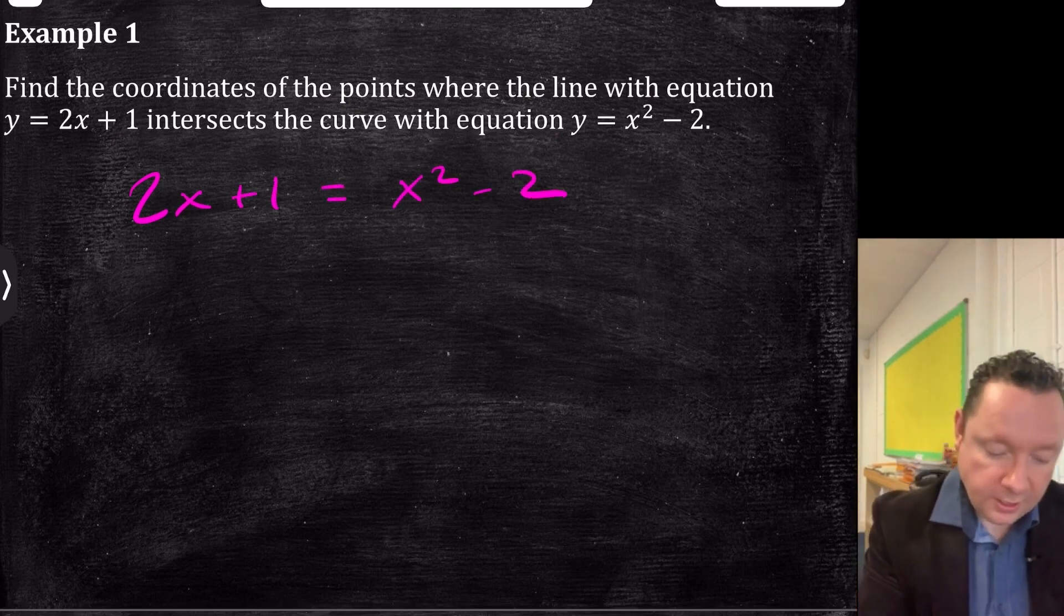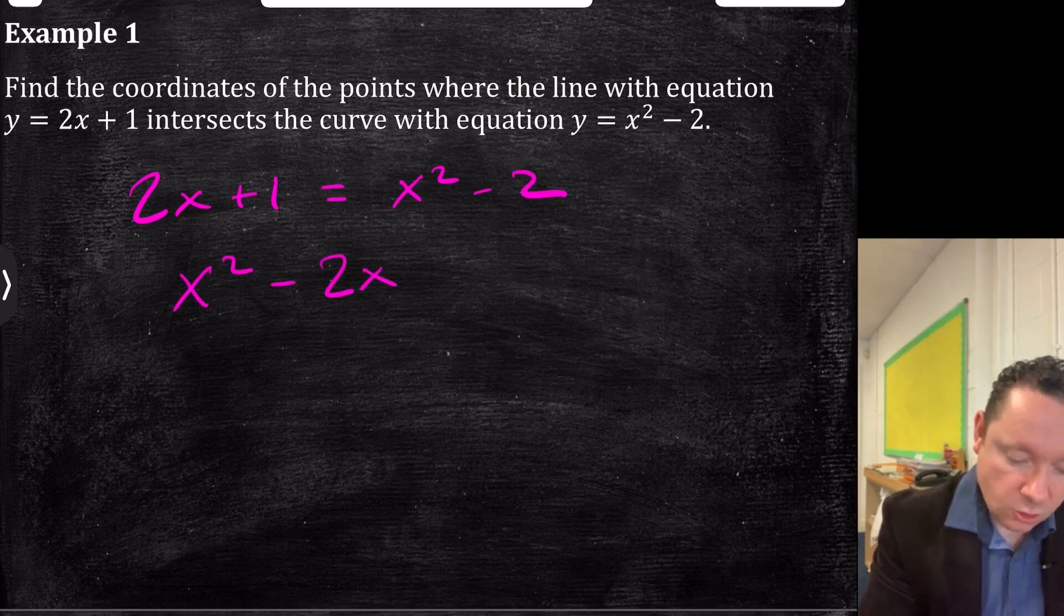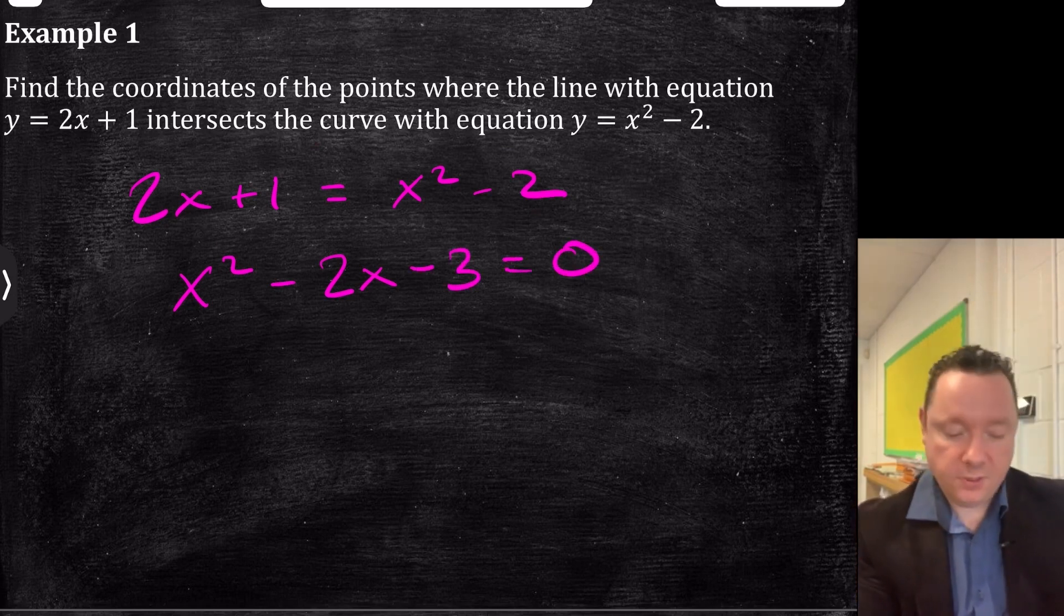We've got x² - 2x, then -2, take away 1, is -3, equals 0. Taking everything off the same side.